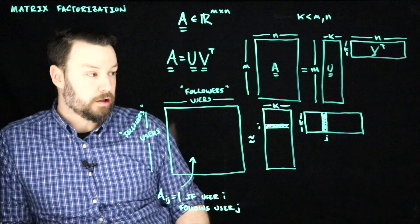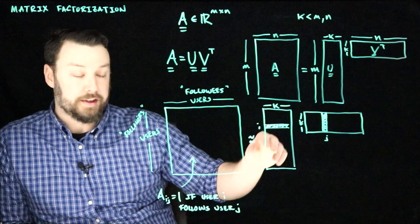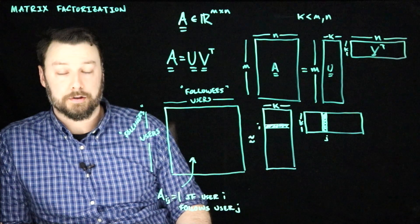So some new person comes along and you want to make a recommendation about who they should follow. Then you look at the inner product between them and that content producer. And if that inner product is big, maybe that's a good recommendation for somebody that they should start following.